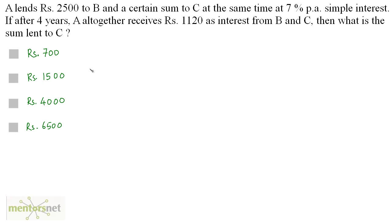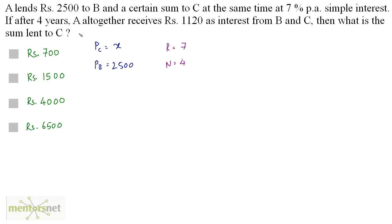A lends Rs 2,500 to B and a certain sum to C at the same time at 7% per annum simple interest. If after 4 years A altogether receives Rs 1,120 as interest, what is the sum lent to C? Let the sum lent to C be x rupees. The principal for B is Rs 2,500, the rate is 7% per annum and the number of years is 4.